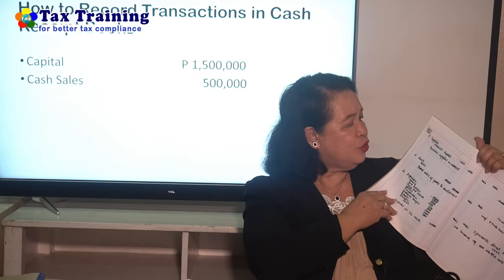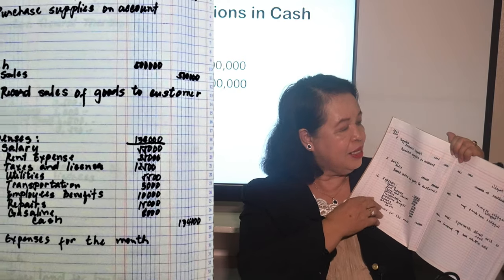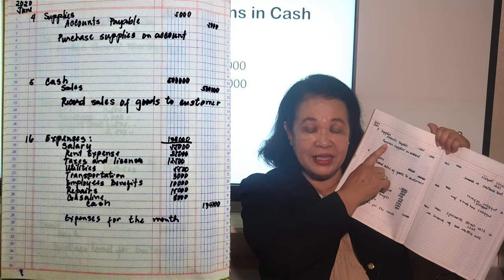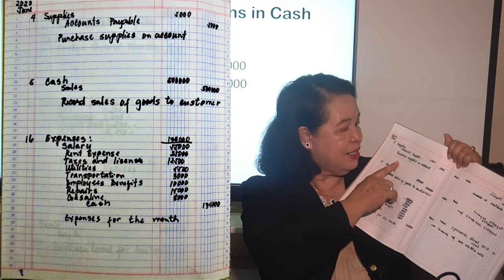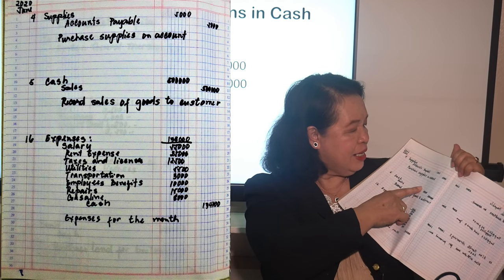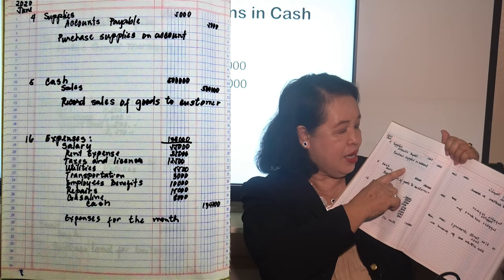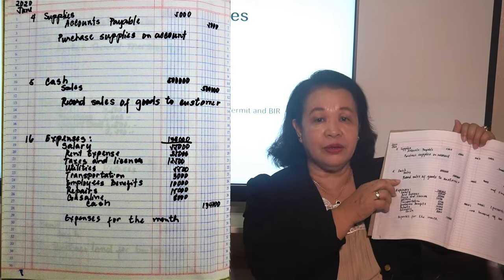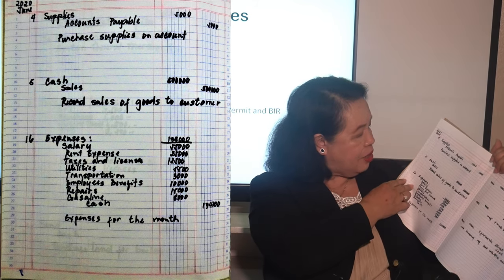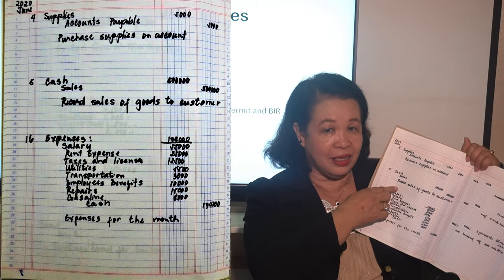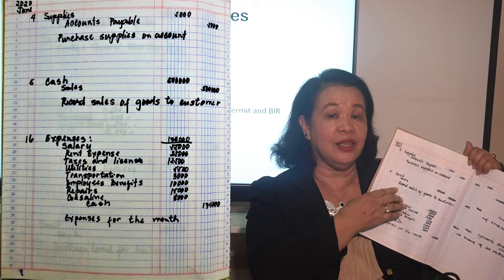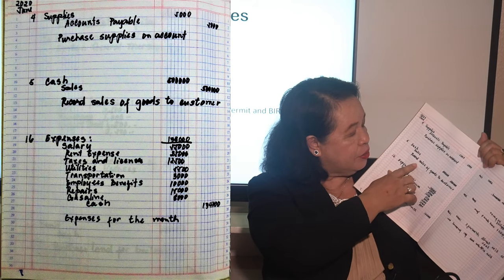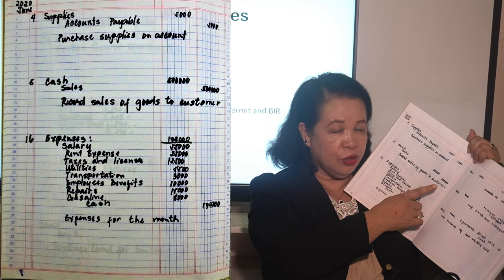The next transaction on June 4: I bought supplies on account — supplies worth 5,000 on credit. Journal entry: debit supplies, credit accounts payable of 5,000. 'Purchase supplies on account, 5,000.' Then June 5, I had sales of 500,000. Journal entry: debit cash, credit sales — because cash increased by 500,000 and I credited sales because I sold 500,000. Explanation: 'To record sales of goods to customer.'